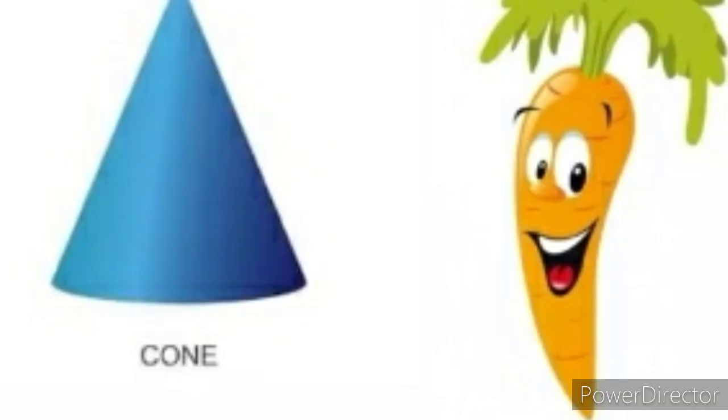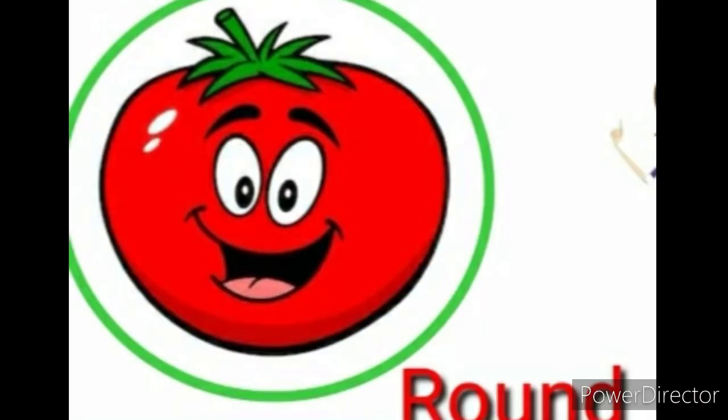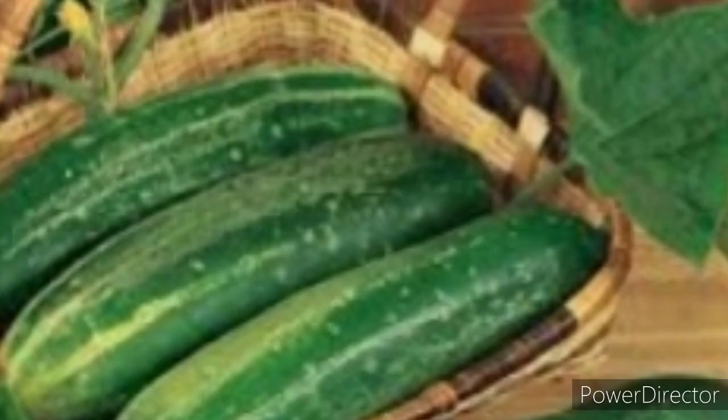You know, every object has its own shape. Today, we will revise the vegetables and their shapes. The carrot is like a cone shape. Tomatoes are round in shape. Cucumbers are cylindrical in shape.